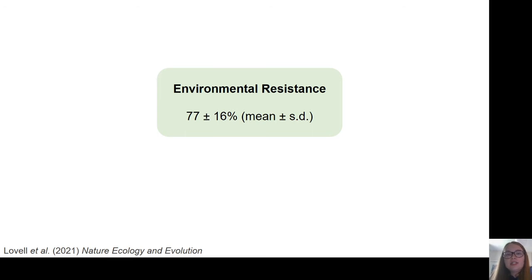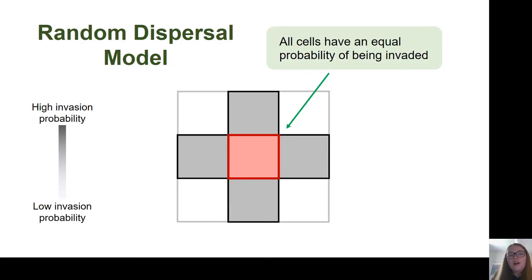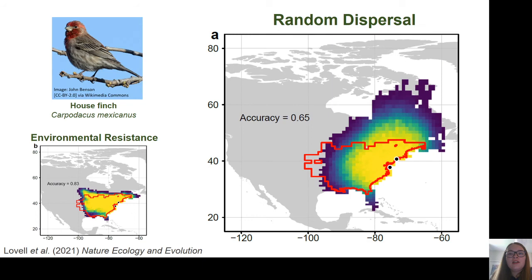Because we started our simulations from the known sites of alien establishment, you would expect some overlap simply due to chance. Therefore, we compared the environmental resistance model to a model of random dispersal, where all cells were invaded with equal probability, and spread from the introduction site was completely random — this is our null model. Going back to our example species, house finch, under this random dispersal model there was a relatively high overlap between simulated and observed ranges, but overlap was lower than the environmental resistance model.